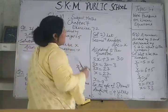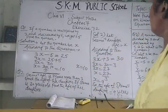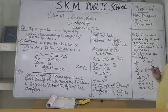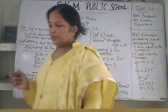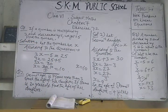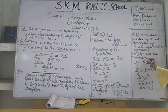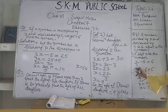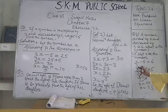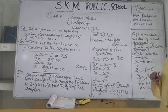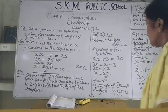Then comes the third question: a number divided by 3 and decreased by 5 is 6. What is the number? Try to read this problem twice. We don't know the number, let it be x. This number x is divided by 3 and decreased by 5 — decreased by 5 means minus 5 — is equal to 6.